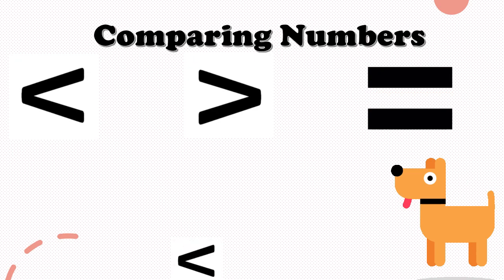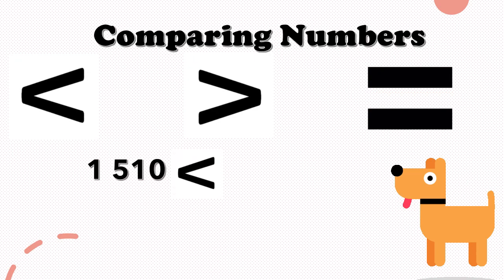For example, 1,510 compared to 1,610 — which number is greater? Notice, the opening part of the sign is facing the larger number, 1,610. The pointed part of the sign faces the smaller number, 1,510.